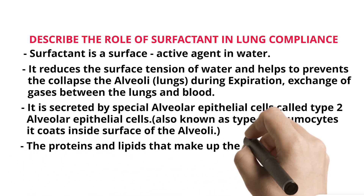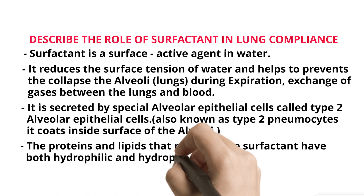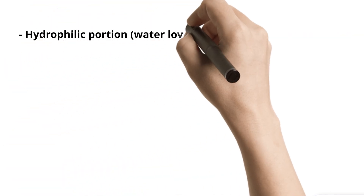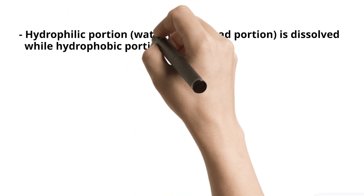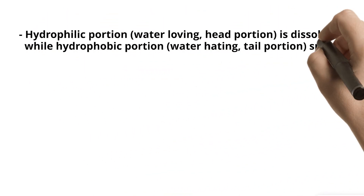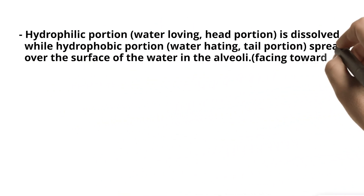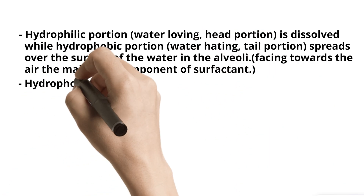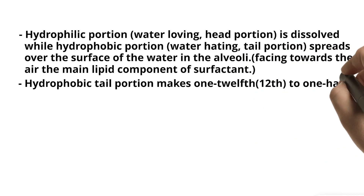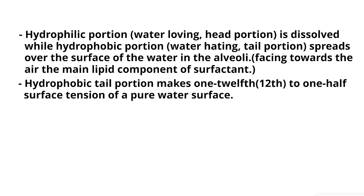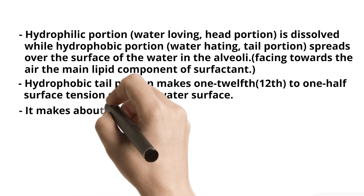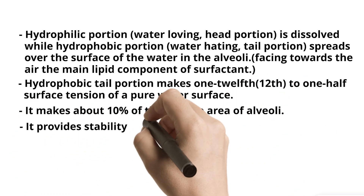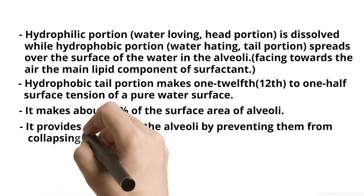The proteins and lipids that make up the surfactant have both hydrophilic and hydrophobic portions. The hydrophilic portion, the water-loving head portion, is dissolved, while the hydrophobic portion, the water-hating tail portion, spreads over the surface of the water in the alveoli, facing towards the air — this is the main lipid component of surfactant. The hydrophobic tail portion reduces surface tension to 1/12th to 1/2 that of a pure water surface, and makes up about 10% of the surface area of the alveoli.